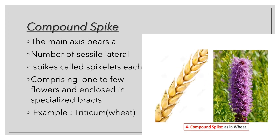Next we have compound spike. The main axis bears a number of lateral spikes called spikelets, comprising one to few flowers and enclosed in specialized bracts. An example is Triticum, which is wheat. The main branch has lateral branches which are also spike branches — spikelets. You can see a spike of wheat which has smaller spikelets arranged laterally, and they are enclosed in bracts. So these are all the types of compound inflorescence.